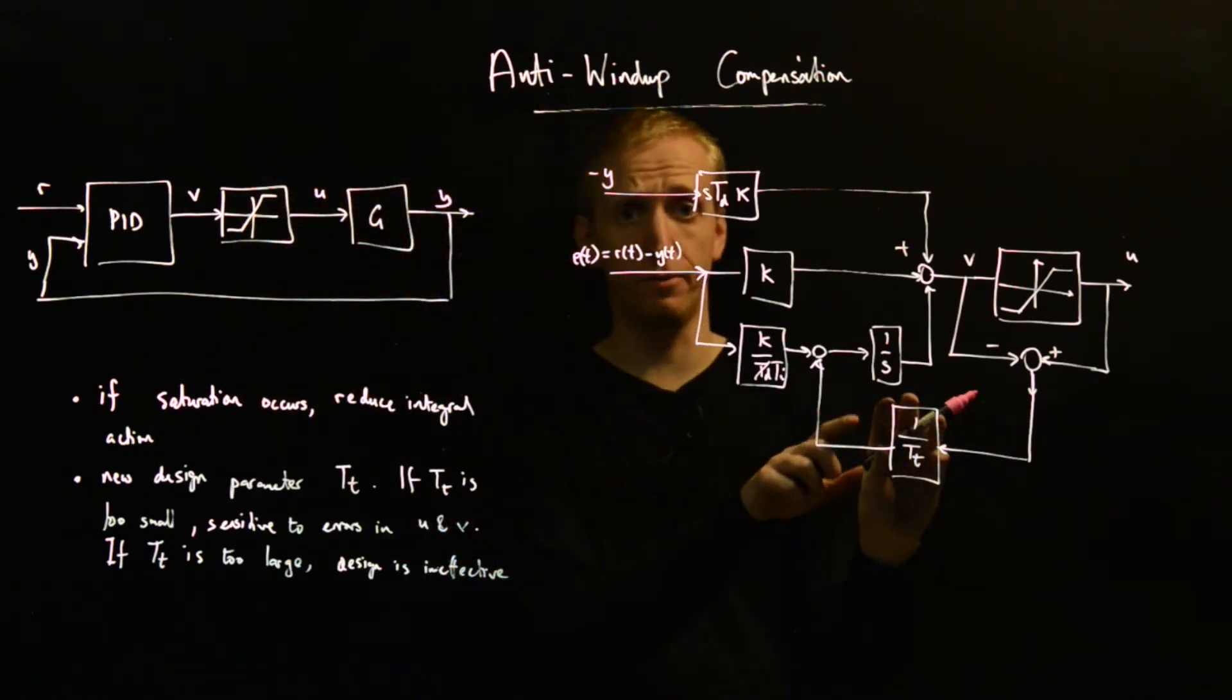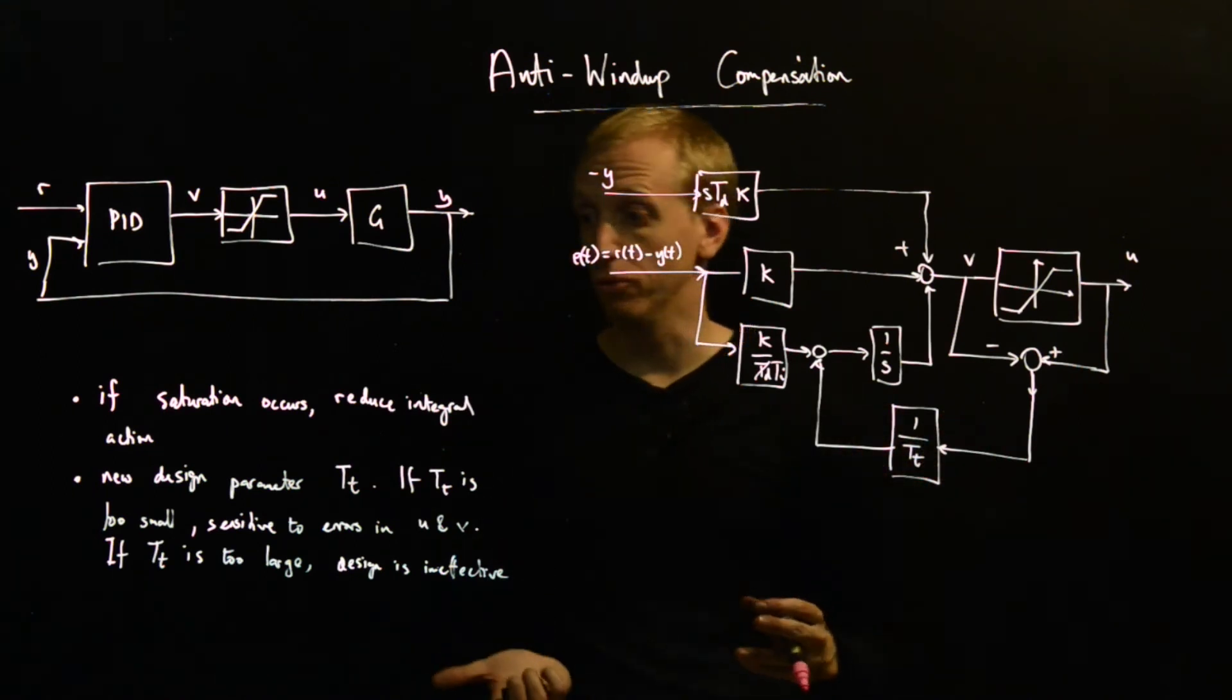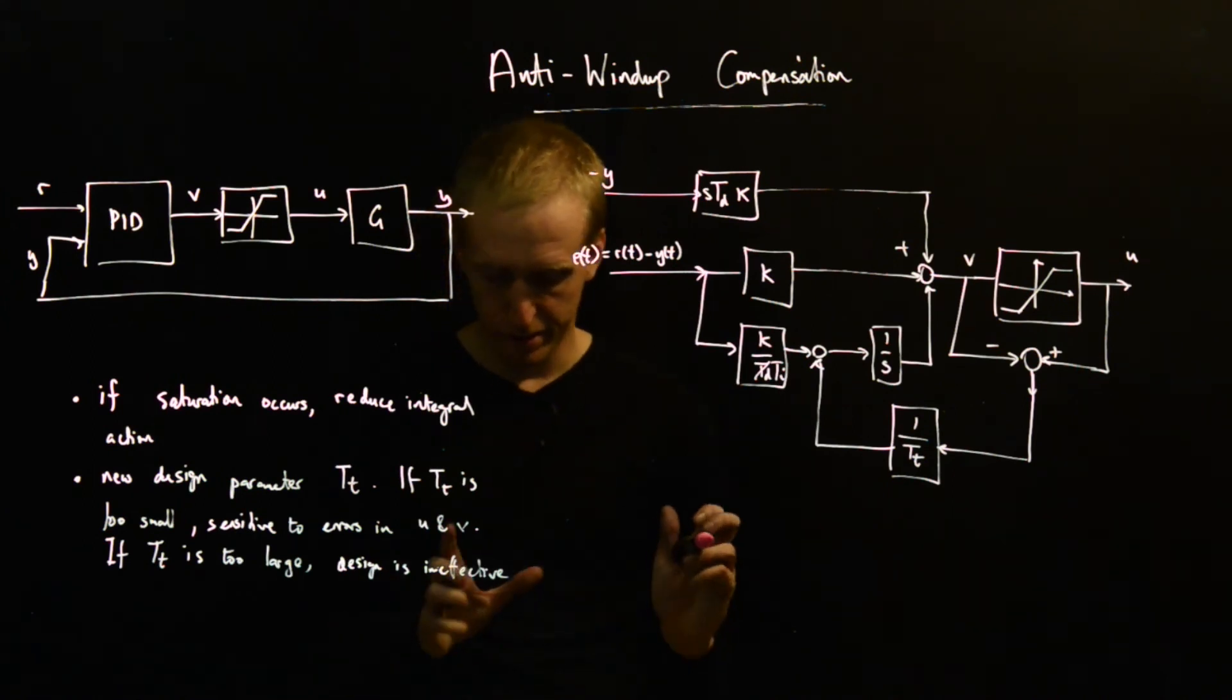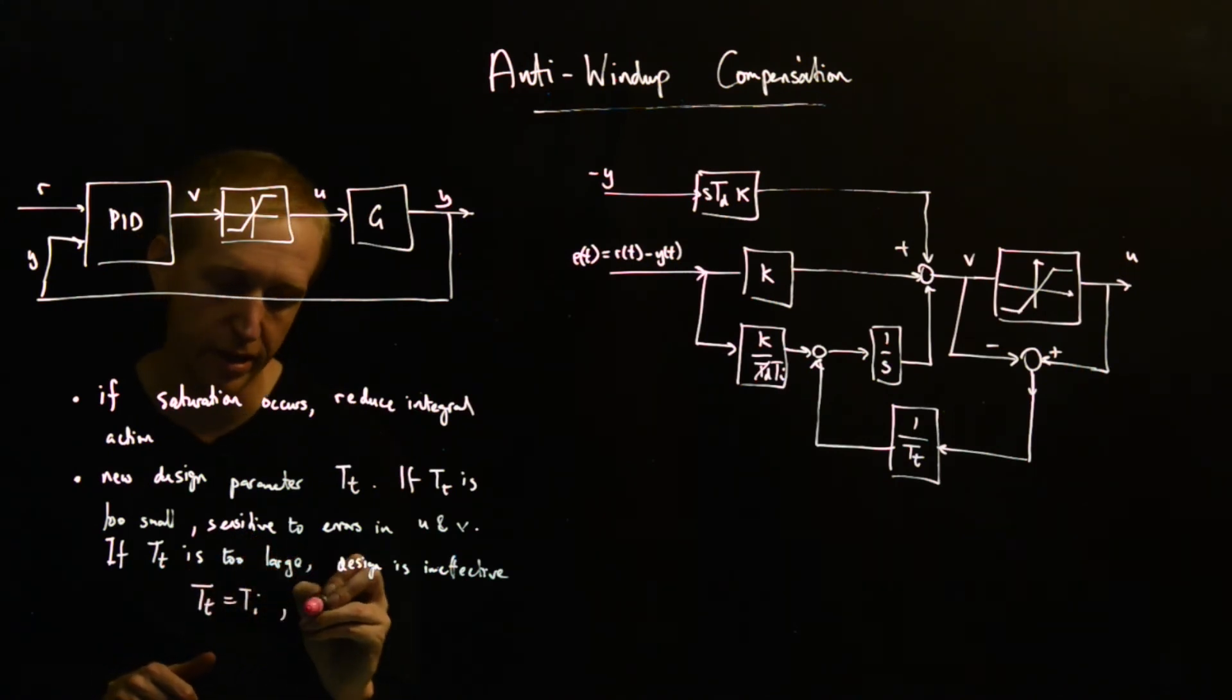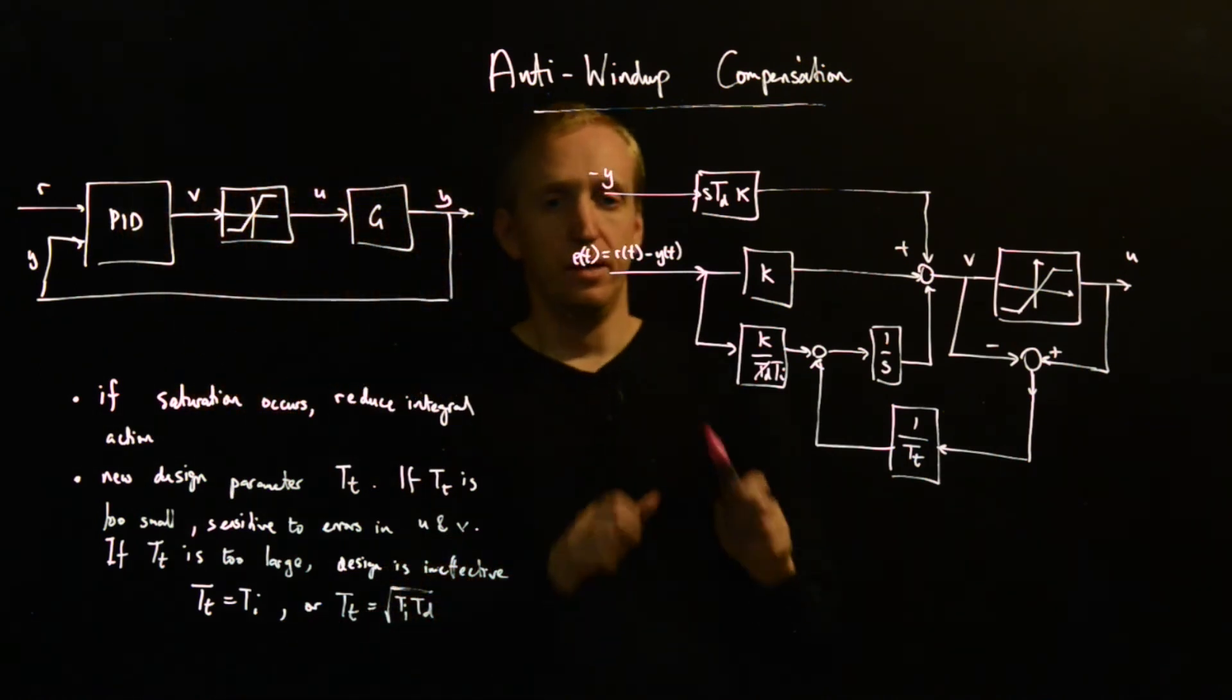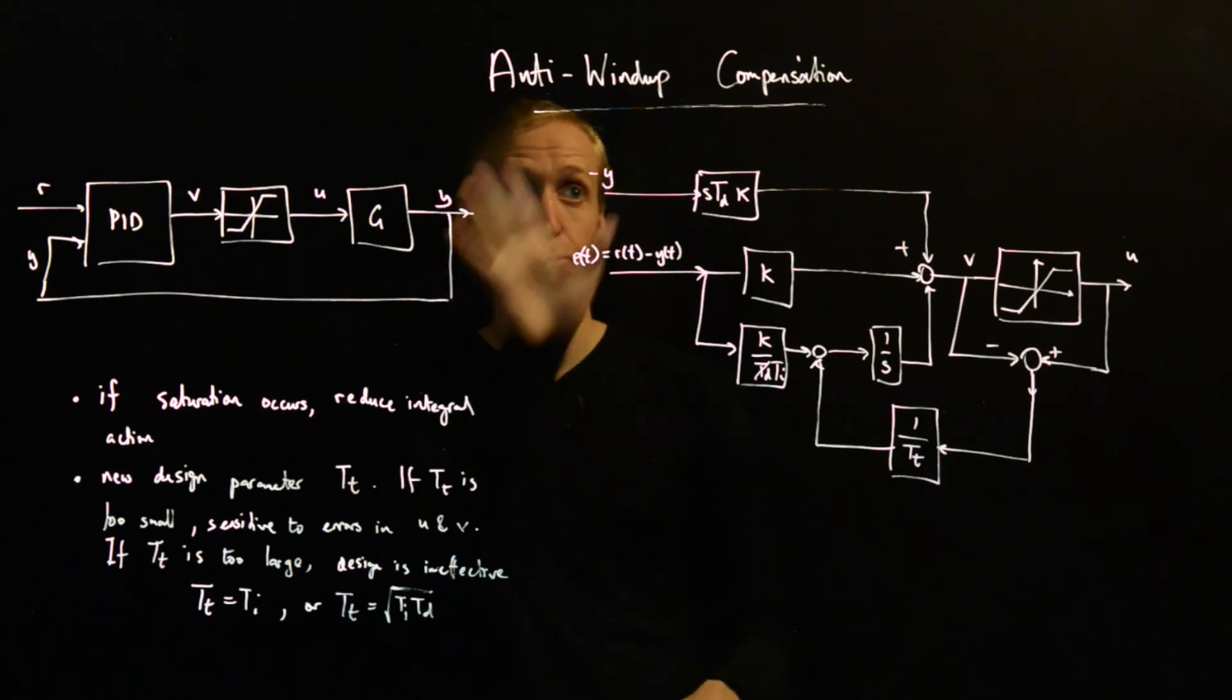So there's some trade-off in the design of the size of this parameter, T_T. And there are automated tuning methods for doing this should you need them. And some useful rules of thumb or some common choices is you'll often pick T_T to equal T_I. Or T_T to equal square root of T_I times T_D.